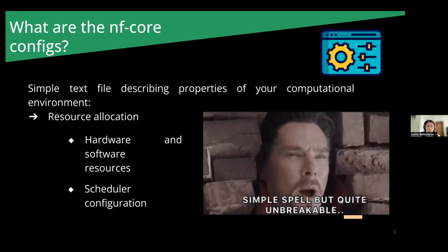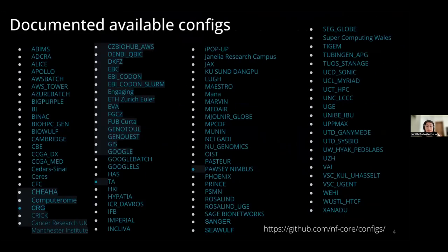Here in this slide, these are all the documented profiles or institutional configs. So if you are lucky enough, there is one already for the institute in which you are working. In my case, for example, EVA is the one that belongs to the Max Planck. And you can access the link here to have an updated overview of them.